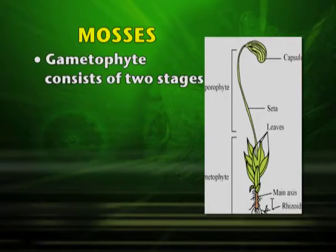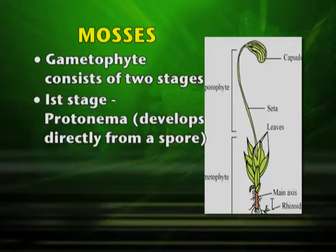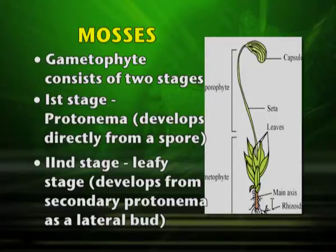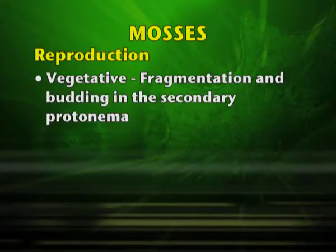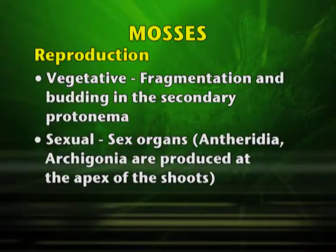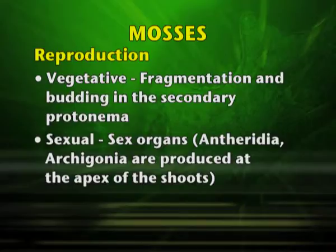Mosses: the gametophyte consists of two stages. The first stage is a protonema which develops directly from the spore. The second stage is the leafy stage which develops from secondary protonema as a lateral bud. Reproduction may be by vegetative means — generally by fragmentation and budding. In sexual reproduction, the antheridia (male sex organ) and archegonia (female sex organ) are produced at the apex of the shoots.